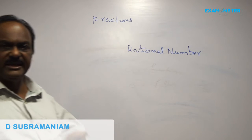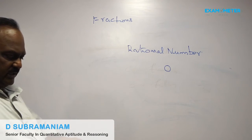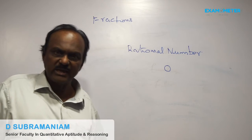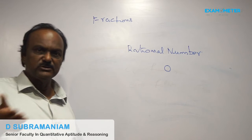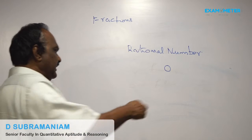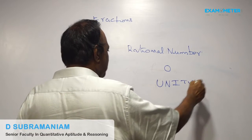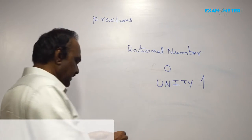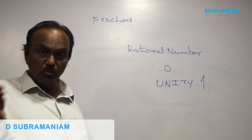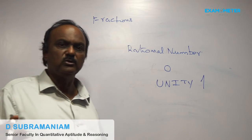A fraction is equal to zero when its numerator alone is equal to zero. Next point: a fraction is equal to unity — unity means one.